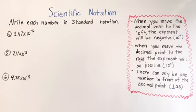Let's start. For number four we have 3.47 times 10 to the negative six power. So we know when it's a negative we're going to move it to the left.